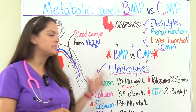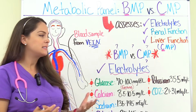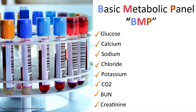A BMP, which stands for basic metabolic panel, is going to look at electrolytes and the person's renal function. The electrolytes it looks at are glucose, calcium, sodium, chloride, potassium, and carbon dioxide. For renal function, it's going to look at the BUN and creatinine.